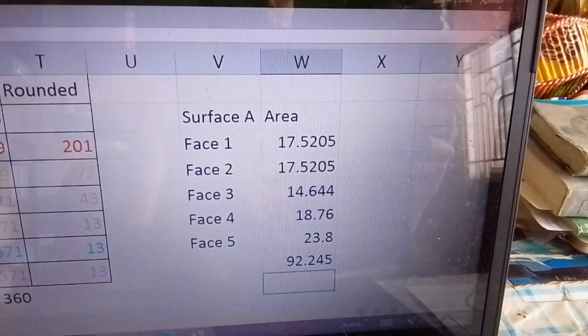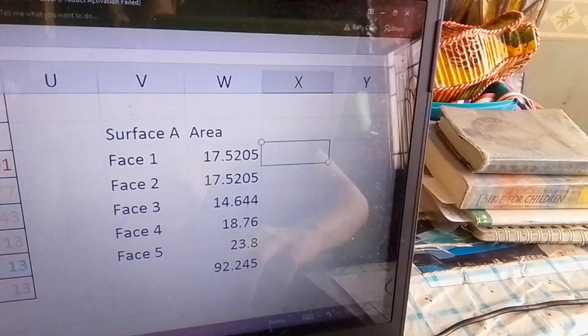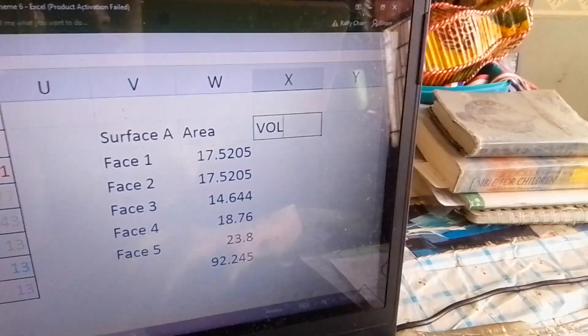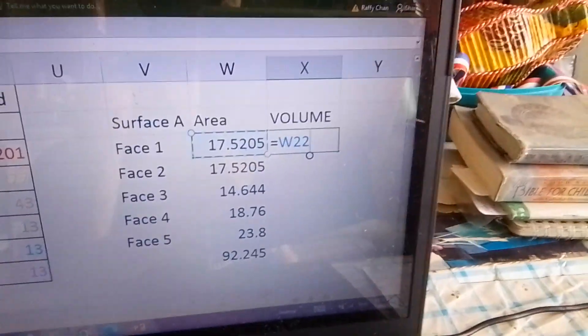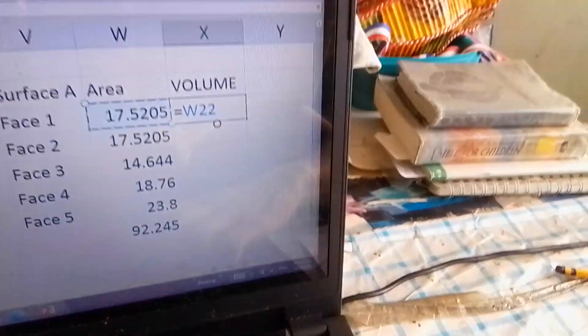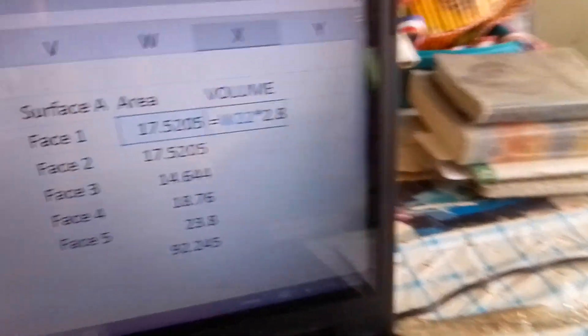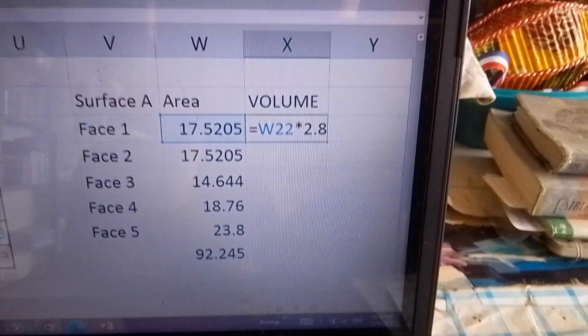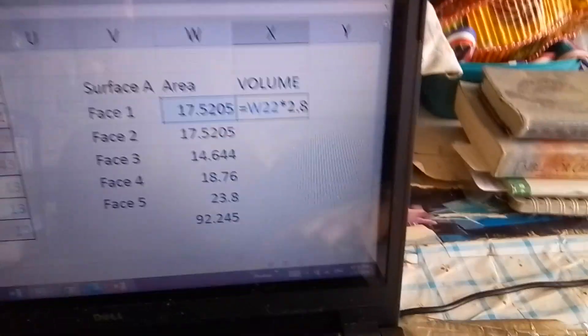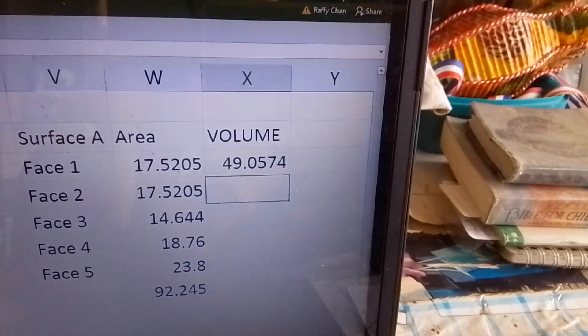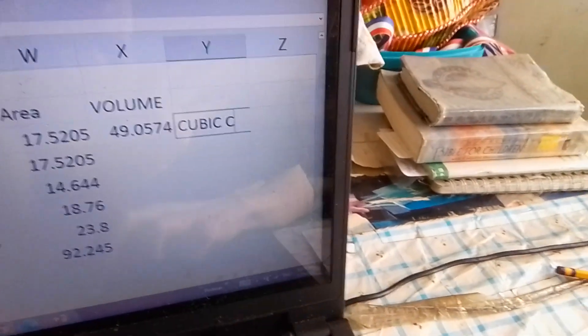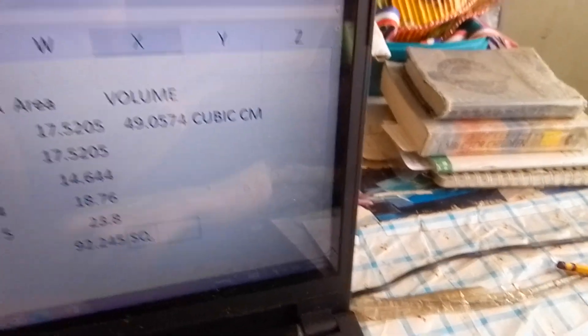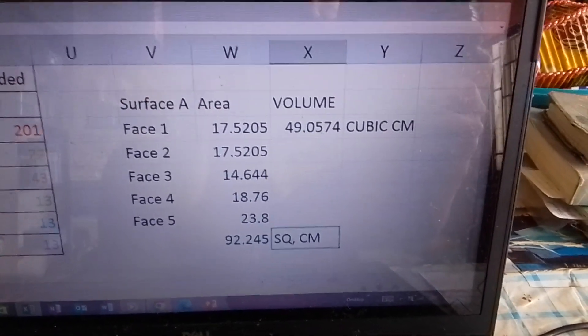Now for the volume, it's easy. Just get the area of the triangle. For volume, click on the face of the triangle, and then you multiply that by 2.8. Because to solve the volume of any prism, it's always the area of the base times the depth, and you get the volume of 49.0574 cubic cm. And that's it. Thank you.